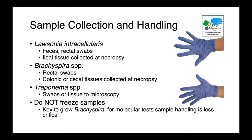For sample collection and handling: for Lawsonia, you want to collect feces or rectal swabs, and potentially ileal tissue collected at necropsy. For Brachyspira, rectal swabs are much better than feces, as the organism lives in the colonic crypts and you're much more likely to recover it from a swab that touches the mucosal epithelium. You can also collect colonic or cecal tissues at necropsy. For Treponema, swabs or tissue biopsies for microscopy are useful.